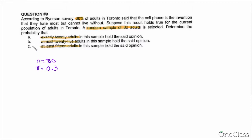Let's start with question A, which asks us to find the probability that exactly 20 adults hold this opinion. Using BPD on our calculator, because we have an exact number, our X is 20.